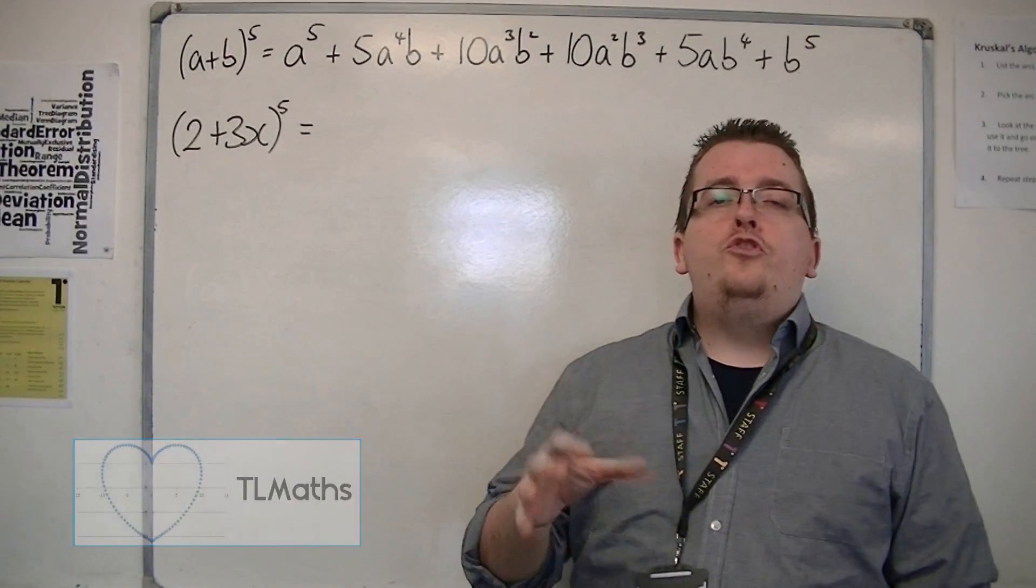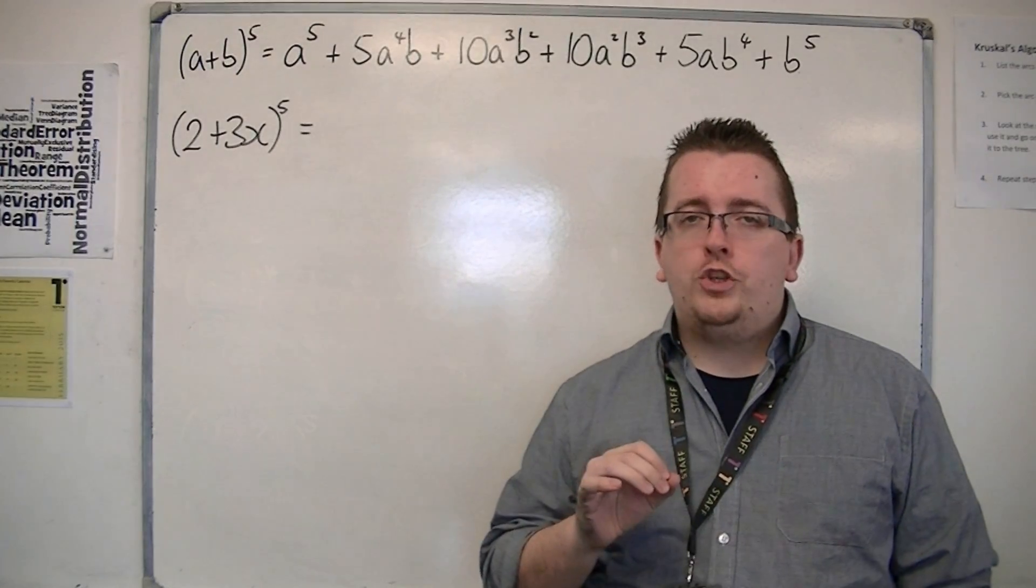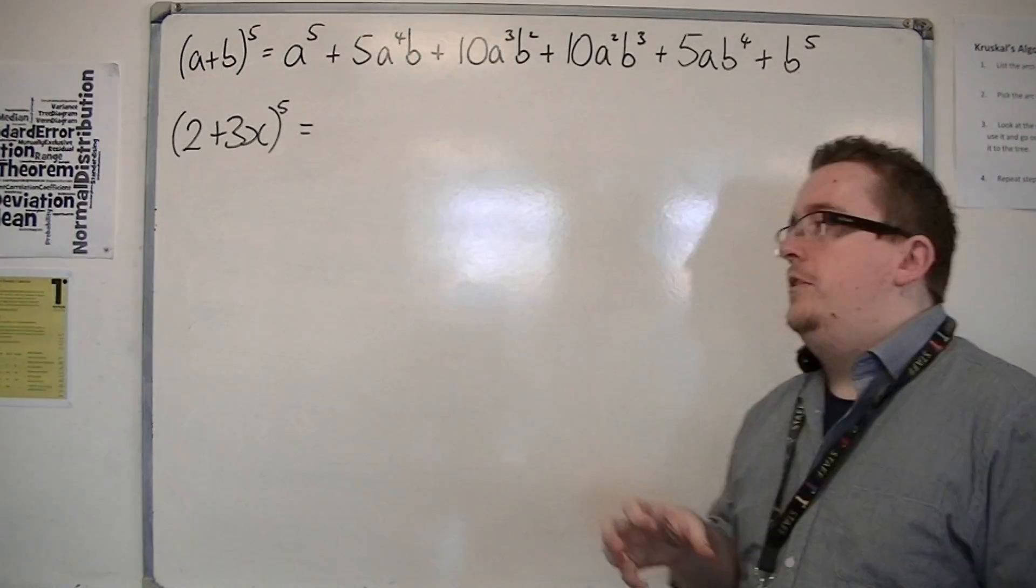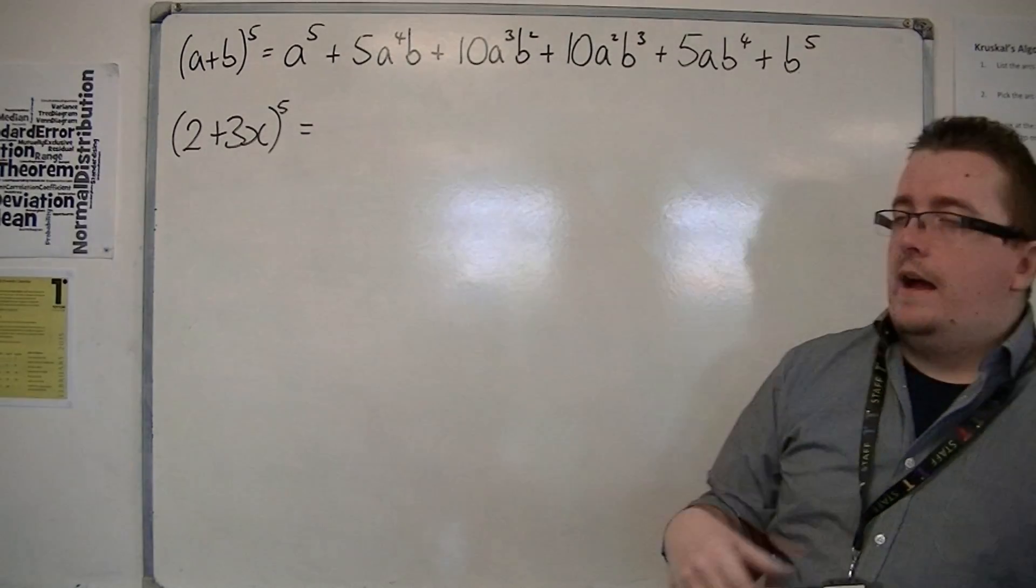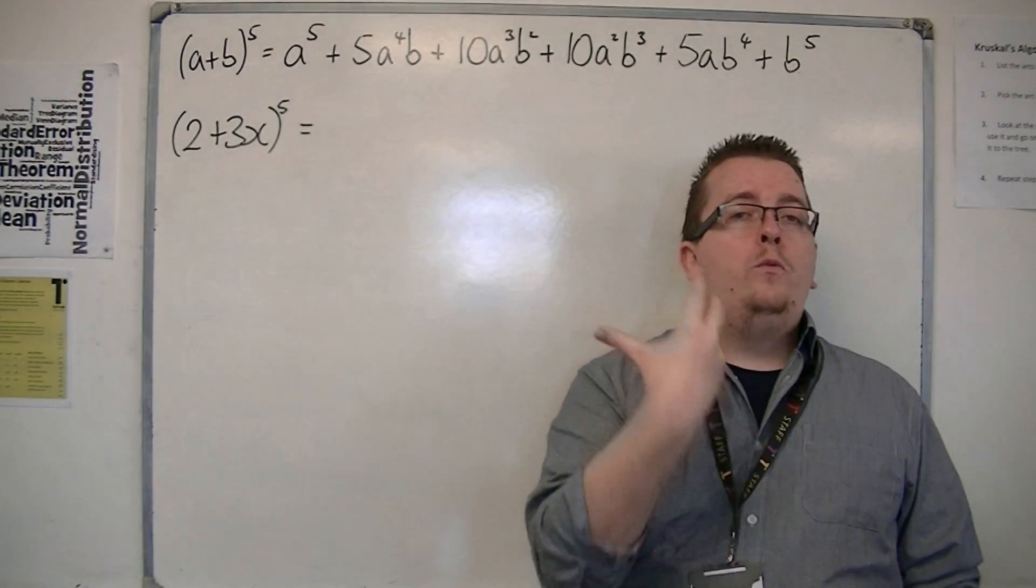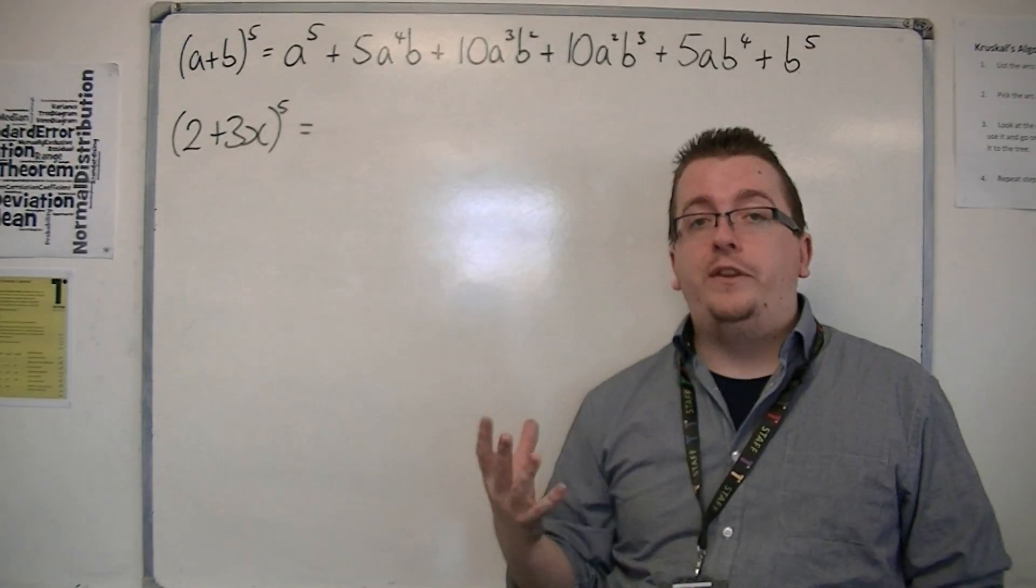Okay, so in the previous video I introduced Pascal's triangle and how that related to binomial expansion. I ended with showing you A plus B to the 5 expanded, and then introducing that we would want to be able to expand 2 plus 3x all to the 5 using this.